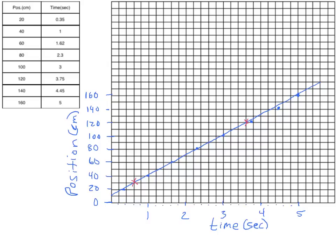Now we make a triangle that follows the line from our first point across, and from our second point down, until they form a triangle. That triangle has a height and a base. We call the height the rise, and we call the base of the triangle the run. Slope is rise over run.